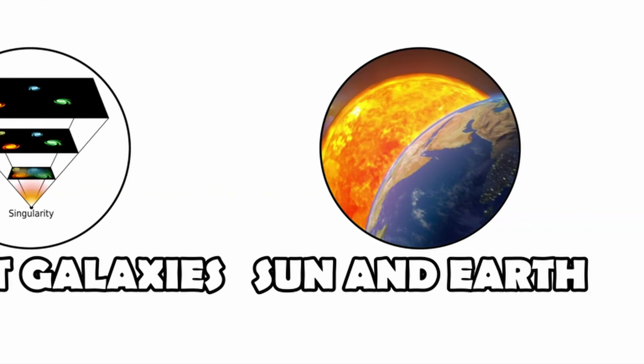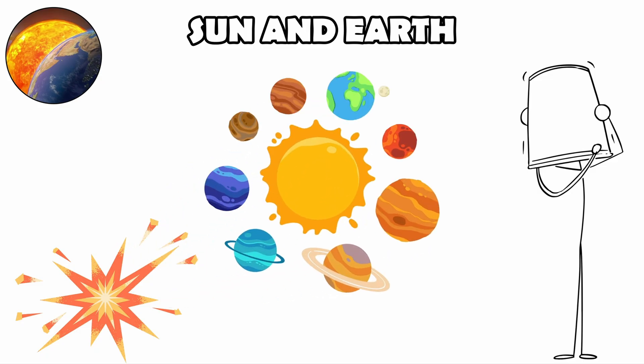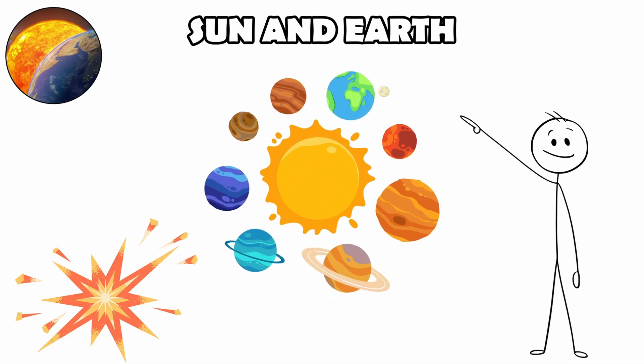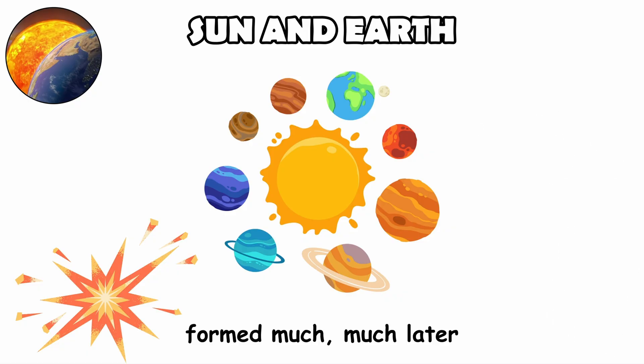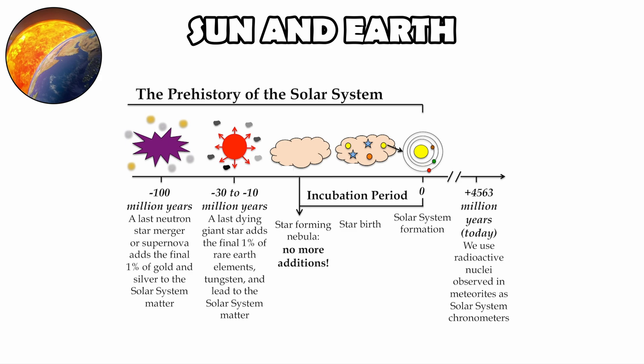Sun and Earth. Some people mistakenly think our solar system was born in the Big Bang. In reality, the Sun and Earth formed much, much later. The Big Bang occurred 13.8 billion years ago. Our Sun and Earth did not appear until only 4.6 billion years ago. That means the universe had already existed for more than 9 billion years before our solar system took shape.